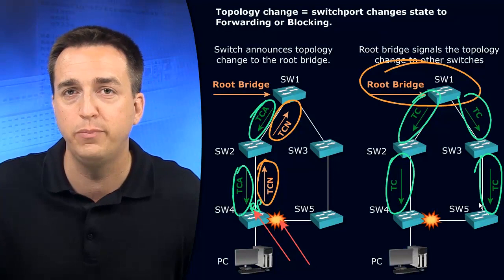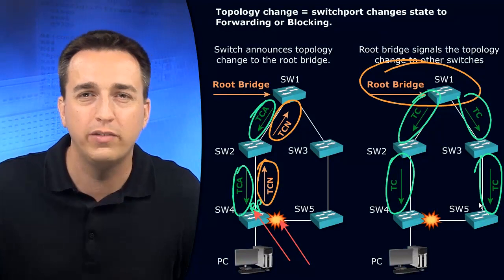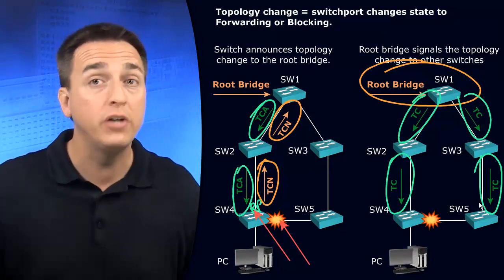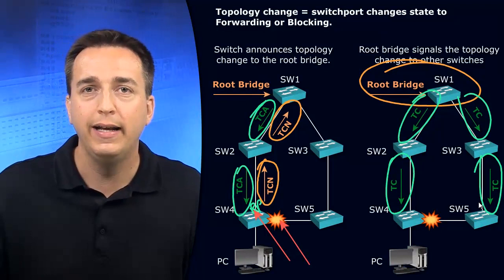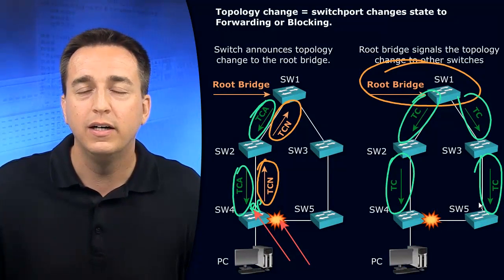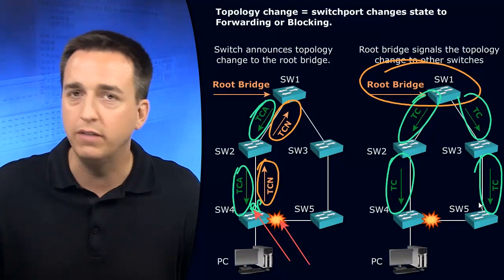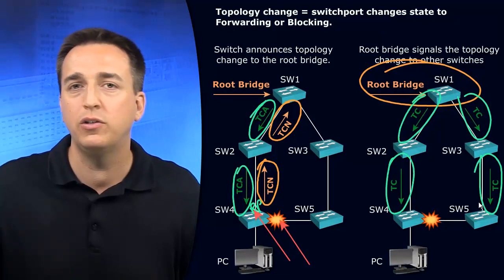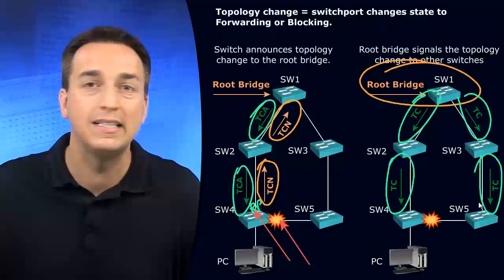This topology change BPDU plays a really important role. Not only do the switches know that a change has occurred, but they have the ability to remove entries in the MAC address table much quicker than they normally would. What is the default time that a MAC address will stay within the CAM table? By default, it's five minutes, which is 300 seconds. How long does it take Spanning Tree Protocol to converge? 50 seconds in total. So there's a big discrepancy in timers.